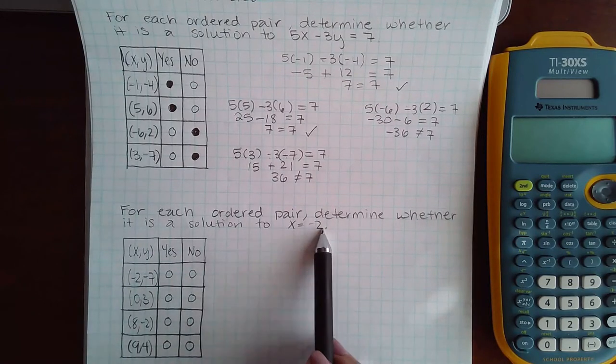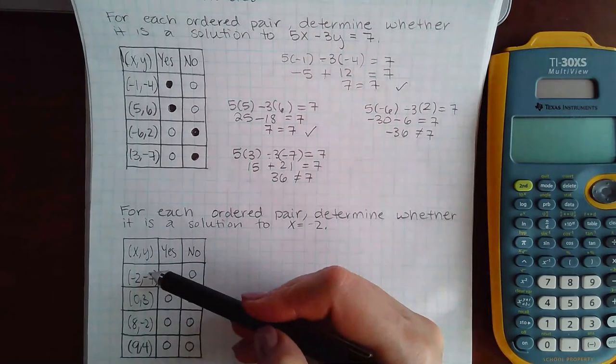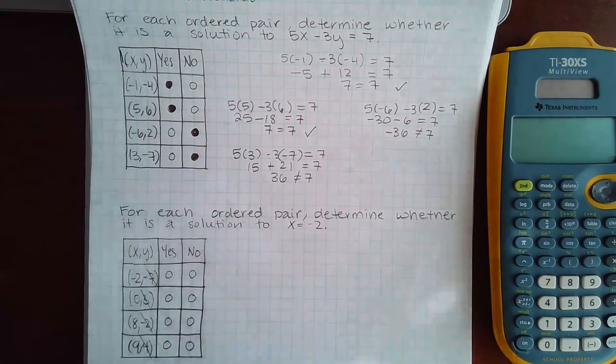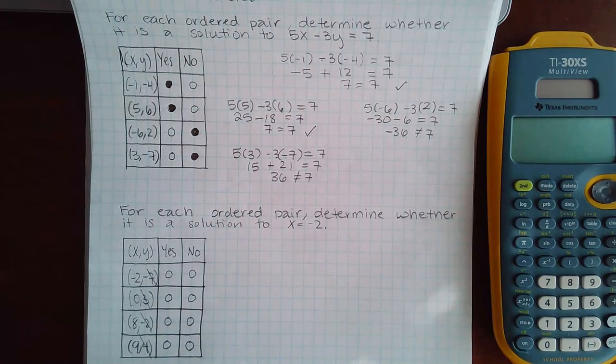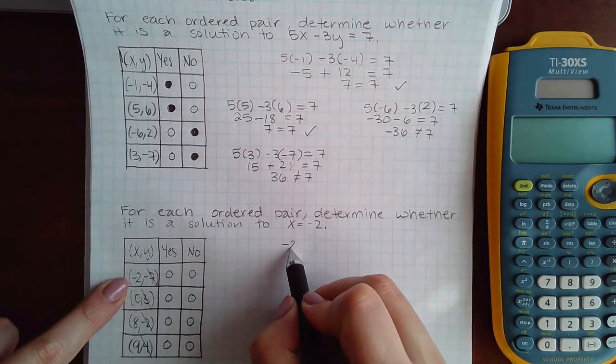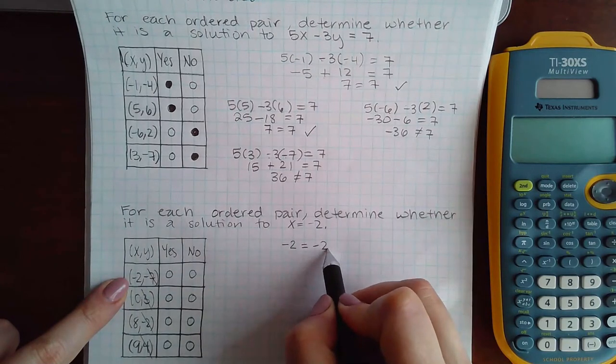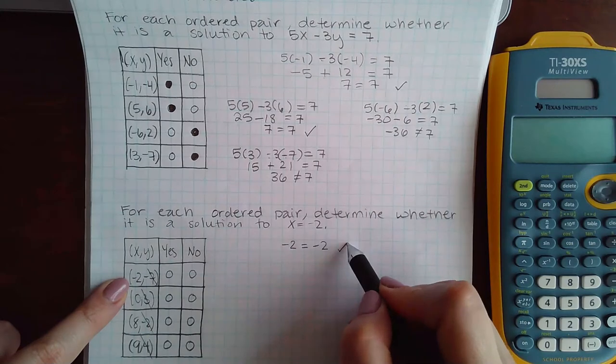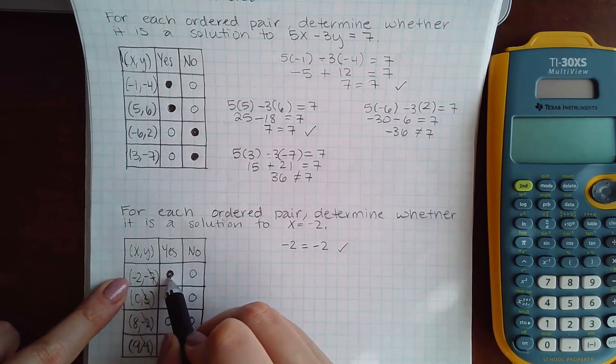So in this case, y is completely missing from my equation, which means I won't be using any of these y values when I go to plug in my values into the equation. The only things I will be plugging in are my x values. So the first statement will become negative 2 for x equal to negative 2. And there's nothing to compute, but this is equivalent. So the answer here is yes.